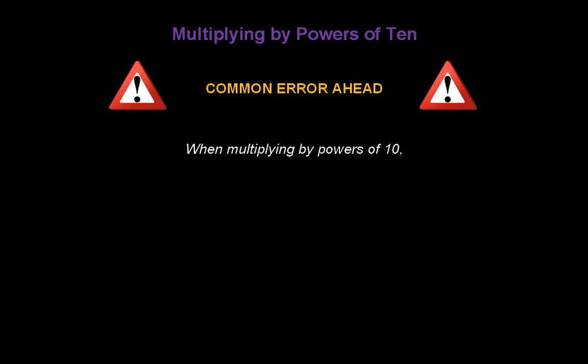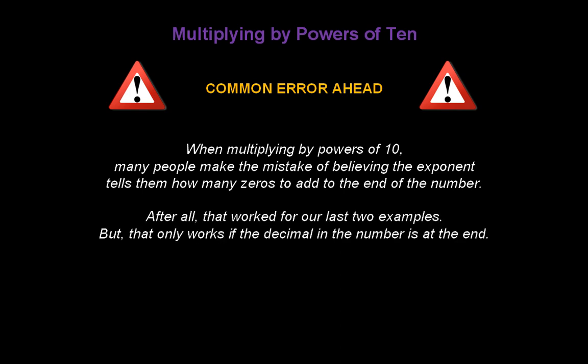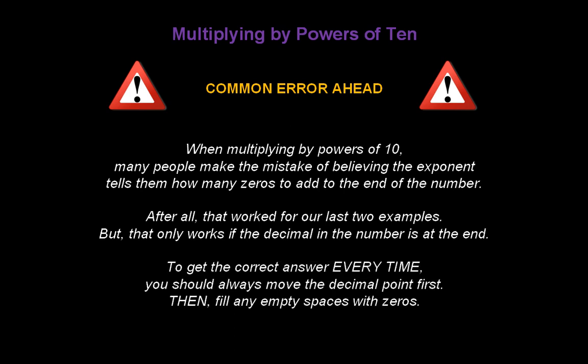Here's a warning — a common error that a lot of people make. When multiplying by powers of 10, many people make the mistake of believing the exponent is telling them how many zeros to add to the end of the number. After all, that worked for our last two examples. But it only works if the decimal is at the end of the number, as it was in those examples. To get the correct answer every time, you should always move the decimal point first, then fill with whatever number of zeros you need in the empty spaces.